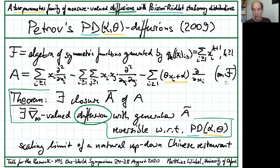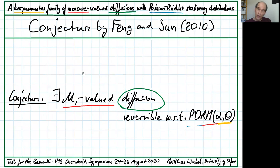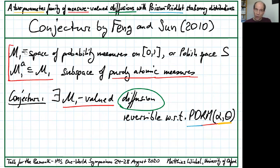But that's a very subtle story. Fang and Sun conjectured that there is a measure-valued version, and that's what we are after. These are conjectured diffusions evolving in a space of probability measures on the interval 0,1, or almost equivalently on any Polish space. We'll see they actually evolve in the subspace of purely atomic measures.